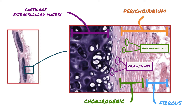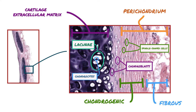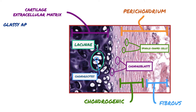Chondrocytes are mature cartilage cells. There are spaces called lacunae throughout the extracellular matrix, and chondrocytes are located within these lacunae. Chondrocytes in hyaline cartilage are often arranged in clusters of two to four cells. The extracellular matrix of hyaline cartilage has a glassy appearance and is composed mostly of type II collagen and proteoglycan.